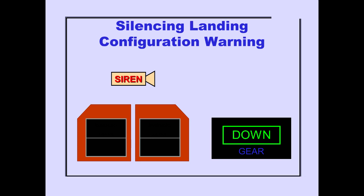If the cause of the landing configuration warning is low radio altitude with a low thrust setting, pushing either master warning caution reset switch, or extending the gear, silences the siren and extinguishes the master warning lights.